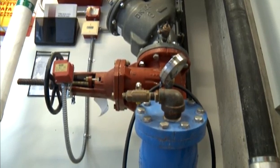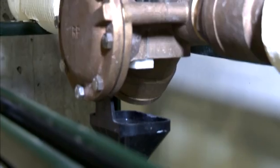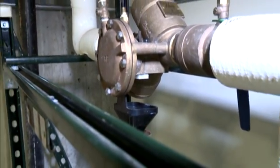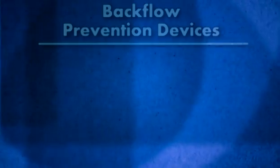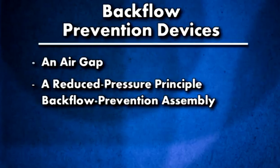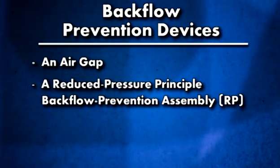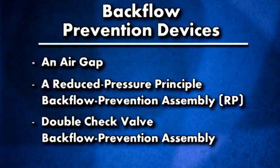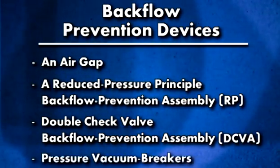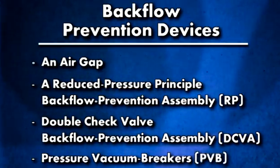Many devices can prevent backflow of contaminants into a water system. The degree of hazard generally determines which of the basic devices should be used. The most common devices include an air gap, a reduced pressure principal backflow prevention assembly (abbreviated as RP), a double-check valve backflow prevention assembly (or DCVA), and pressure vacuum breakers (abbreviated as PVB).